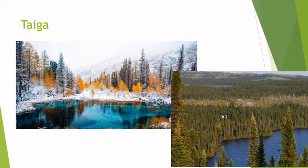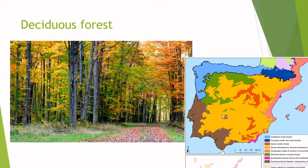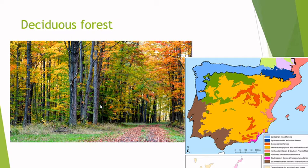In the temperate zones, found at intermediate latitudes, we've got mainly three types. We've got the deciduous forests — usually forests of very big trees that lose their leaves in autumn. It usually rains a lot and the temperatures are mild.